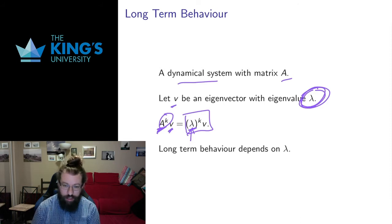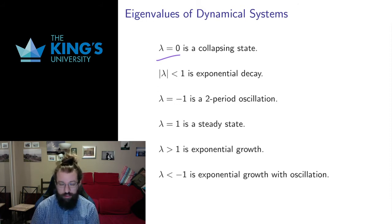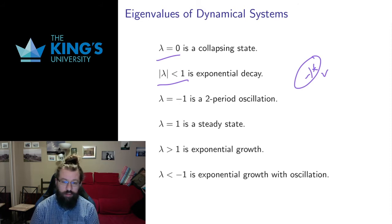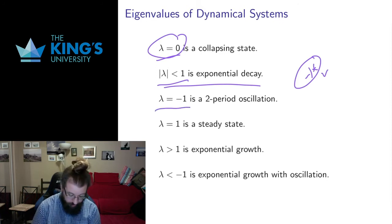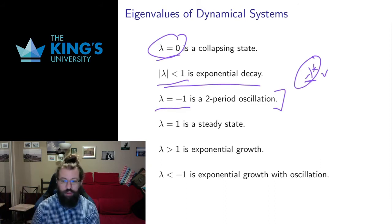If the eigenvalue is 0, then after one action everything is sent to 0 — a collapsing state. If lambda has absolute value less than 1, higher powers get smaller and smaller, giving exponential decay toward 0 asymptotically. If lambda equals -1, higher powers switch back and forth between +1 and -1, giving a two-period oscillation between a positive and negative state.